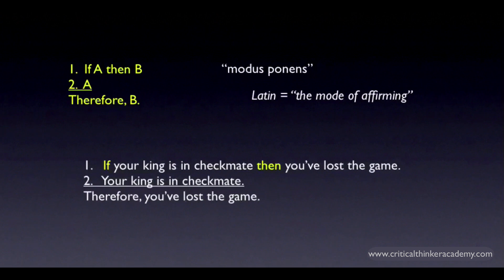Here's an example: If your king is in checkmate, then you've lost the game. Your king is in checkmate, therefore you've lost the game. The conditional premise asserts that if the antecedent is true, then the consequent is true. The second premise affirms that the antecedent is in fact true, and you then validly infer that the consequent must also be true.